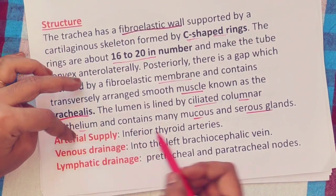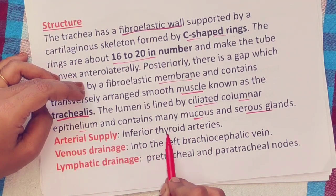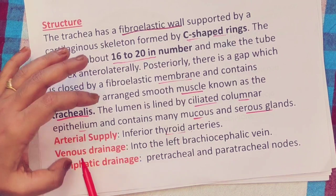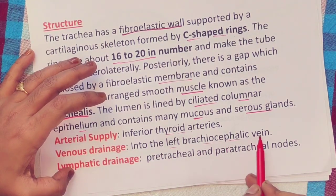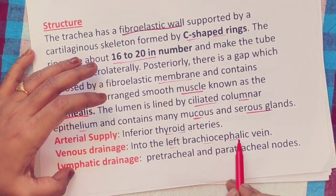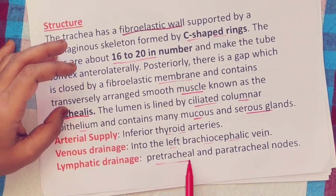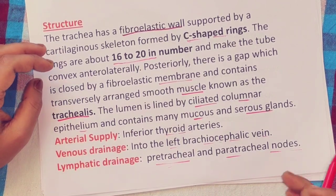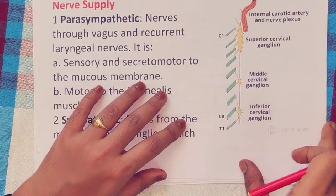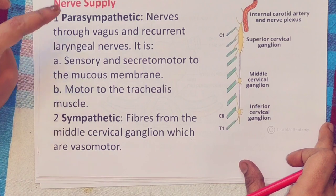Blood supply: the arterial supply is from the inferior thyroid artery. Venous drainage is into the left brachiocephalic vein. Lymphatic drainage is to the pre-tracheal and para-tracheal lymph nodes.